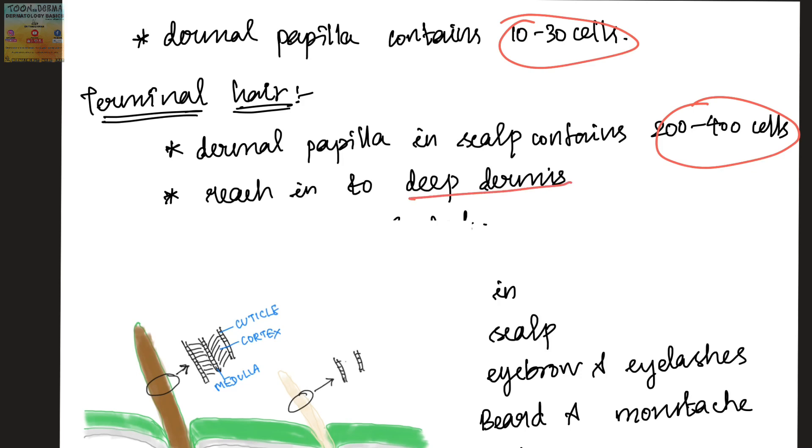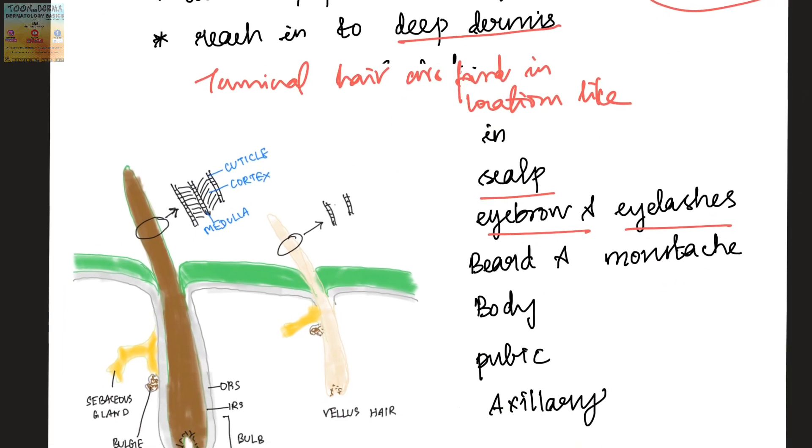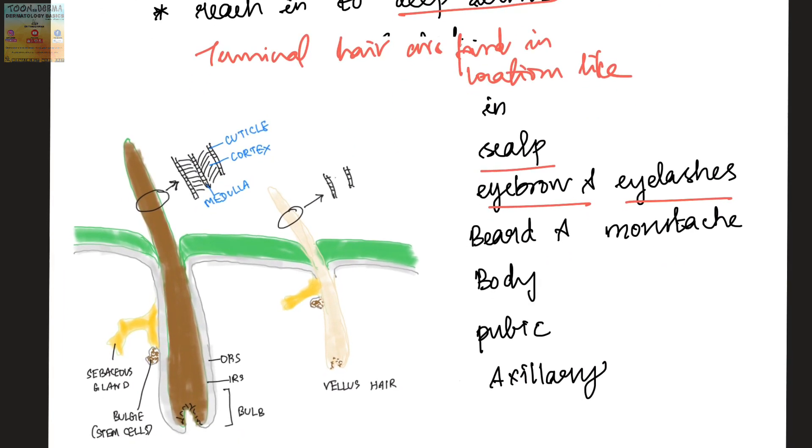Terminal hairs are found in locations like scalp, eyebrow and eyelashes, beard and mustache, body, pubic, and axillary hair.